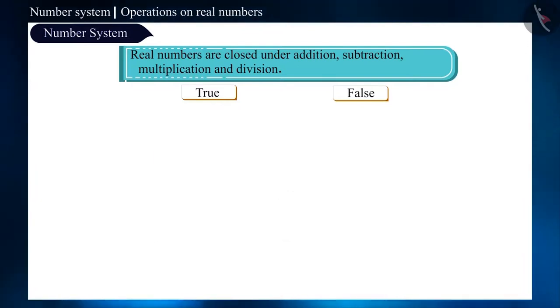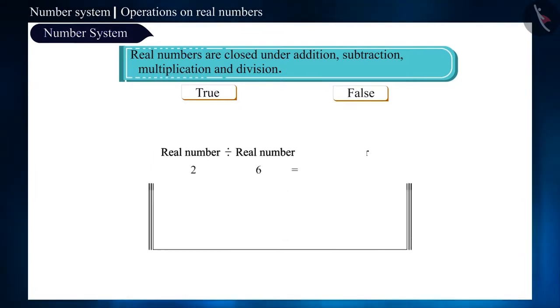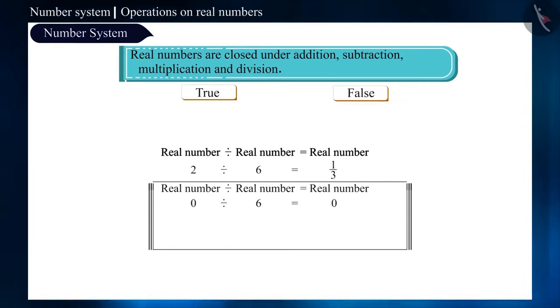Now, let's try for division. 2 and 6 both are real numbers. On dividing the two, we get 1 by 3 which is also a real number. Friends, now in the place of 2, if we keep 0 and divide it by 6, we get 0 which is also a real number.